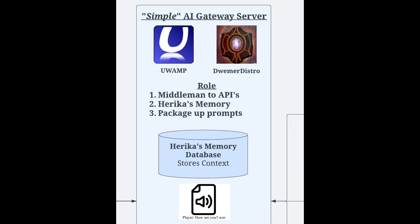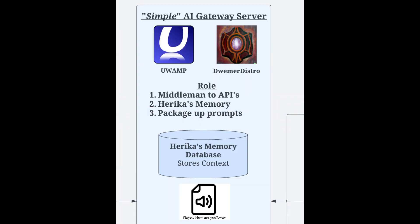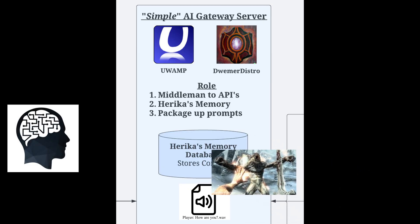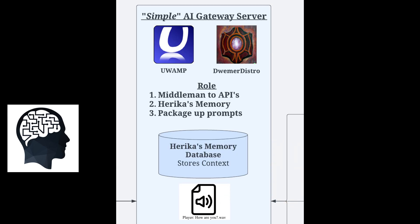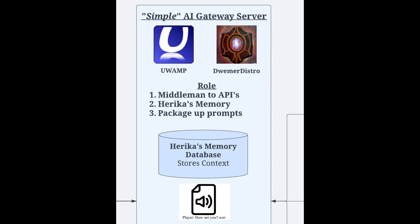The server can either be run on UWAMP or XAMPP — pretty much two ways to host the web server. And it really has three main roles. The first one is as a middleman to all these APIs, which is really where a lot of the AI magic happens. The second one is it acts as Haruka's memory — all of these context events get saved to a database. One of the things we're still working on is longer-term memory; right now Haruka kind of has the memory of a goldfish, but functionally it will work the same, with events saved into a database for her to retrieve later. And finally, we're using the simple AI gateway server to package up code responses to send to these APIs, so we can actually get useful information out of them.